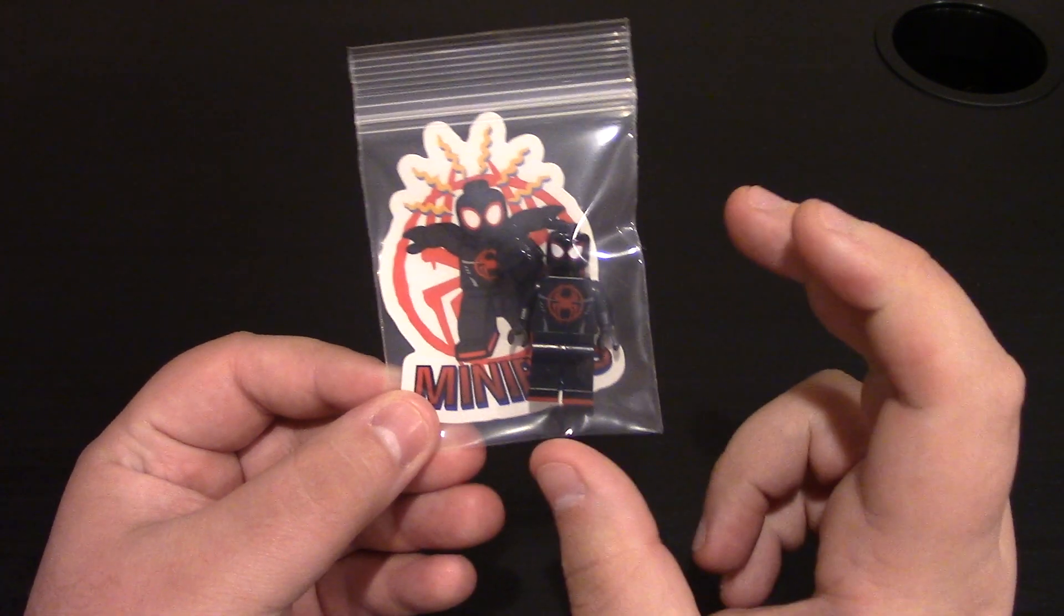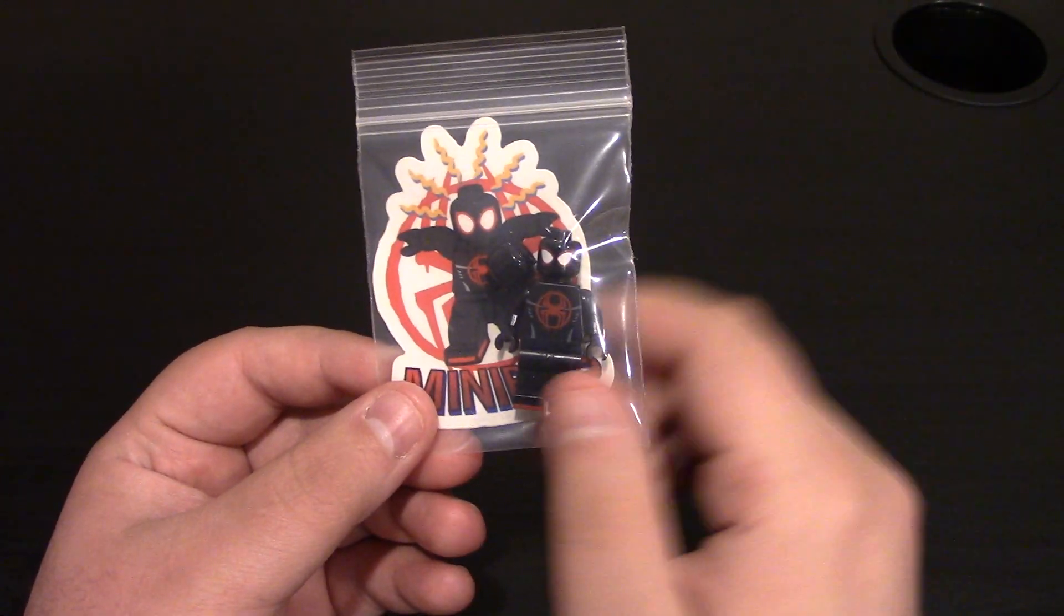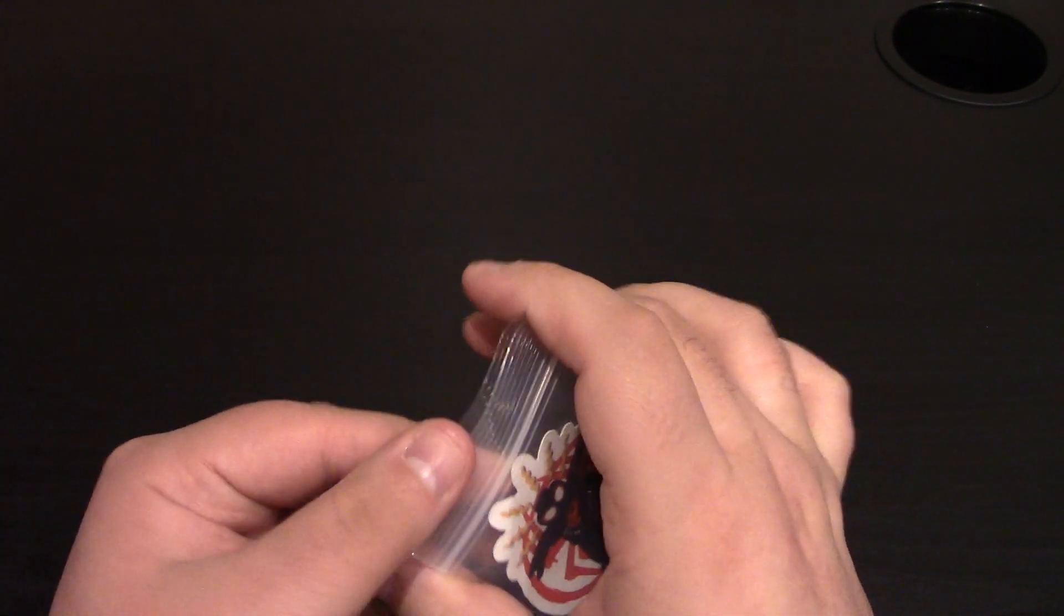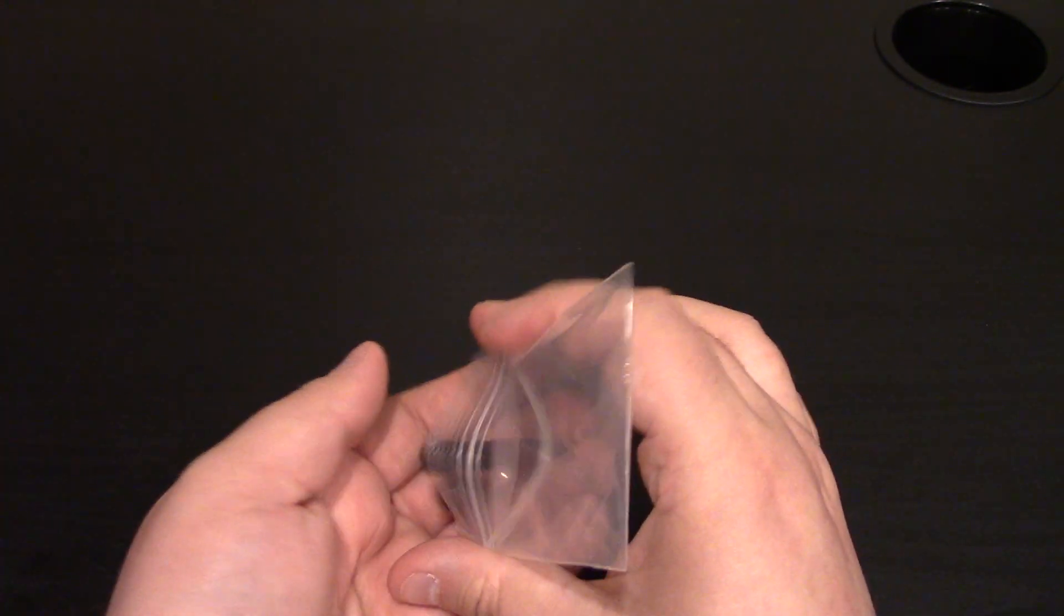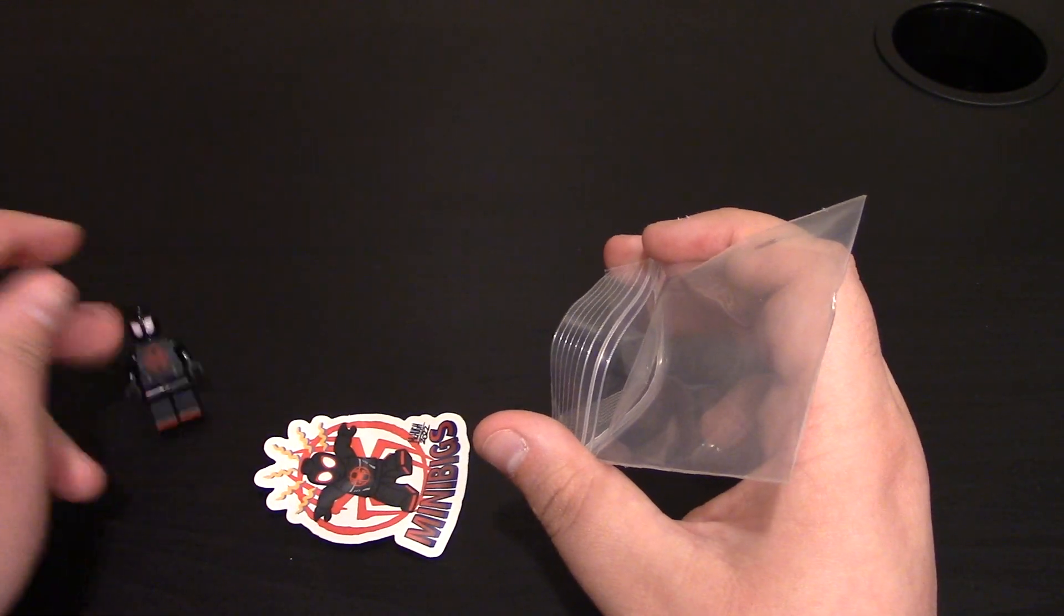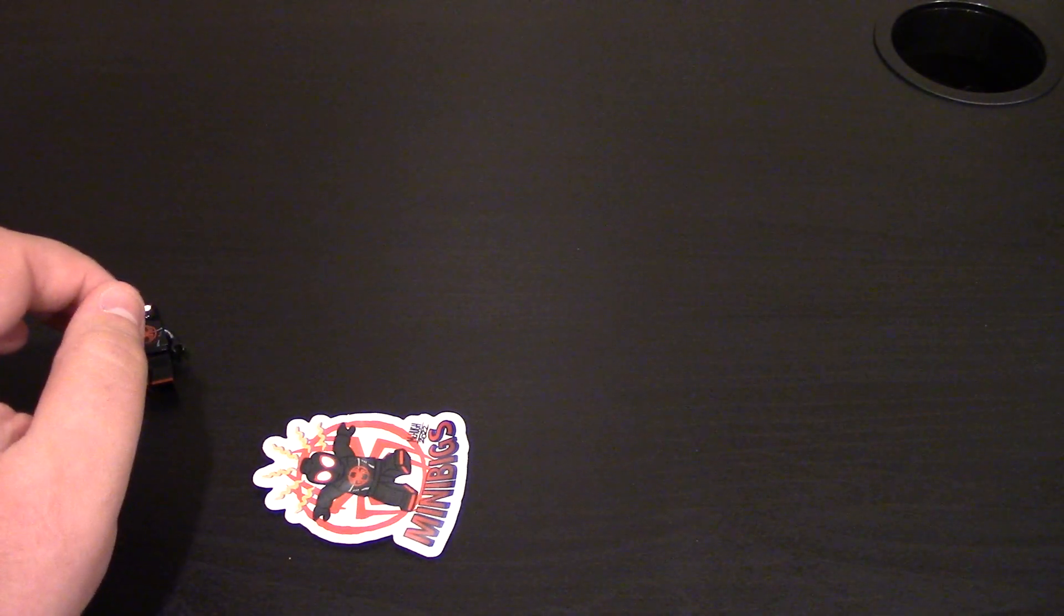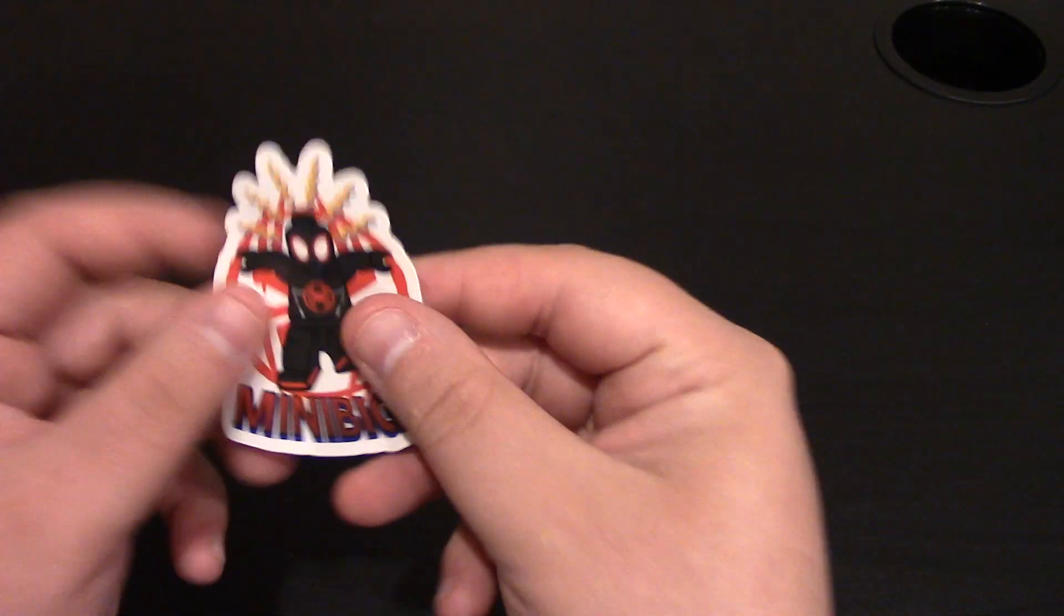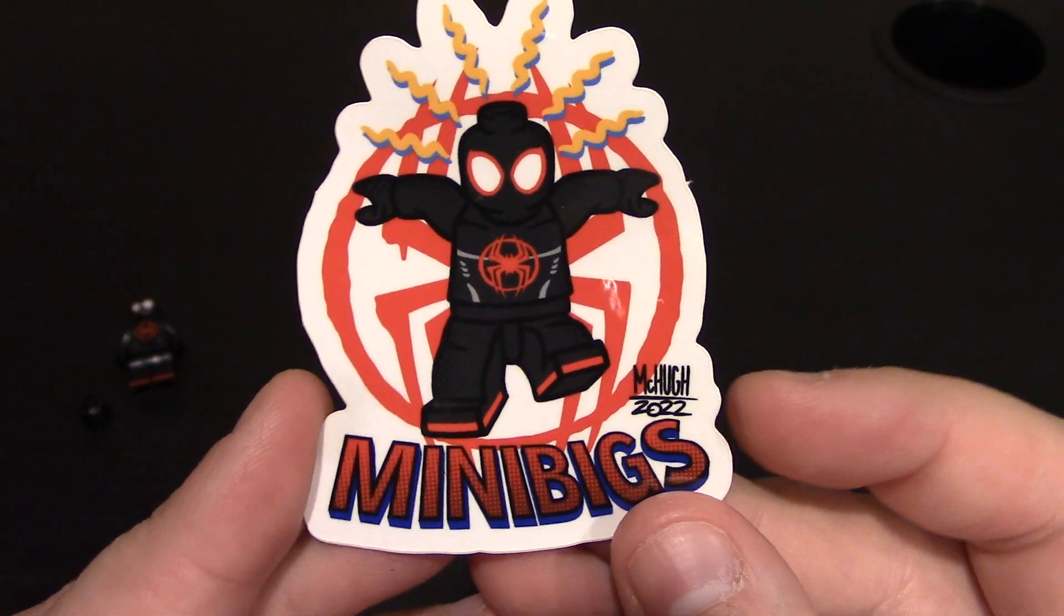But now on to the very cool minifig, the Miles Morales one. You can see it comes in just the Ziploc baggie, but it does come with a sticker. Get him out here. It does come with two heads. You'll be able to see, when I was talking about that emotion in the Spider-Man eyes, you'll be able to see that with this one. We have the Miles Morales Spider-Man minifig sticker. Mine kind of got beat up probably because of the packaging.